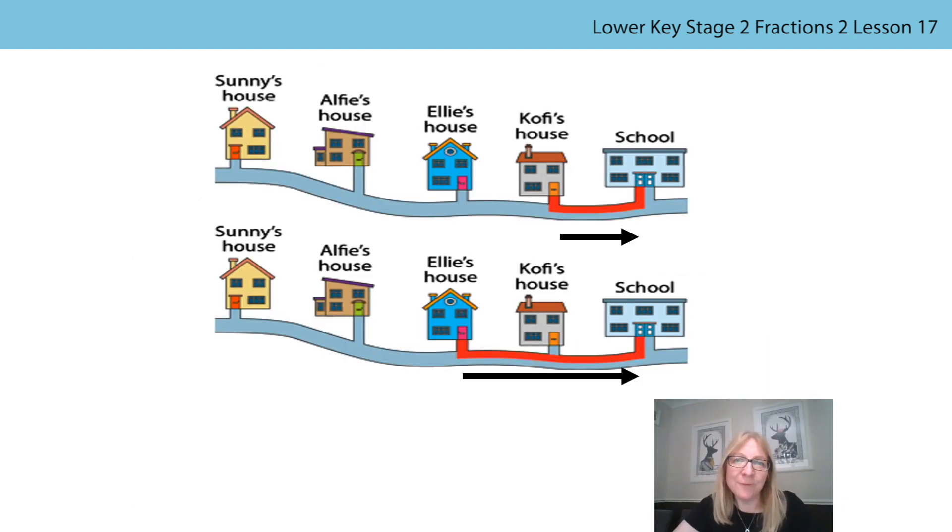You've seen these pictures before. They show the journey made by Kofi and Ellie from their home to school. Can you see who has the shortest journey to school? You're right if you say Kofi. If they have to walk back from school to home as well each day what fraction of the whole does this picture represent? It represents one half of their total journey. It represents the walk to school but not the journey back from school. I wonder how we could represent the whole journey to show who has the longest walk each day. Pause the video now and have a go.